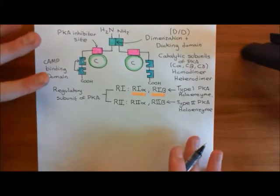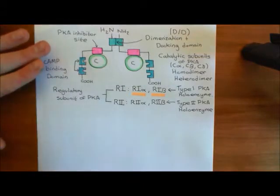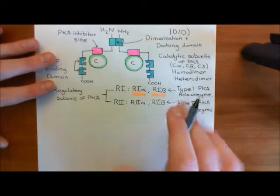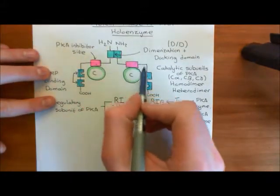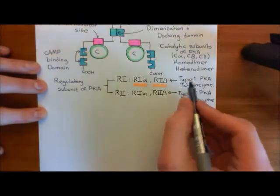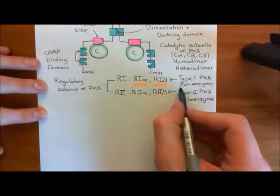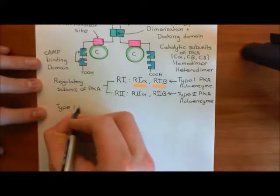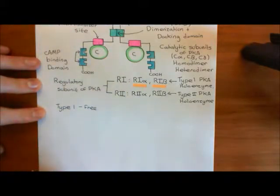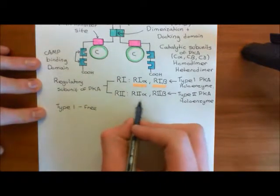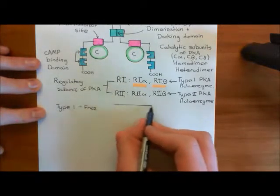Before discussing activation, let's discuss the significance of a holoenzyme being type 1 or type 2, which refers to the type of regulatory subunits used. Type 1 protein kinase A holoenzymes, built out of type 1 regulatory subunits, are generally free within the cytoplasm. Whereas type 2 protein kinase A holoenzymes, built out of type 2 regulatory subunits, are generally bound to other proteins which are bound to the cell membrane or to other intracellular membranes.